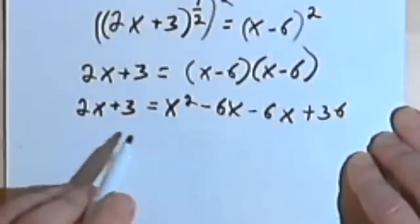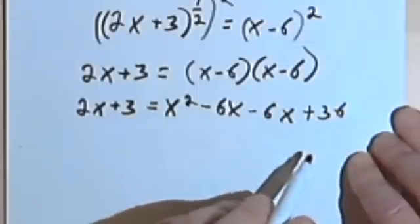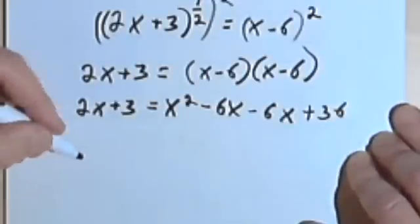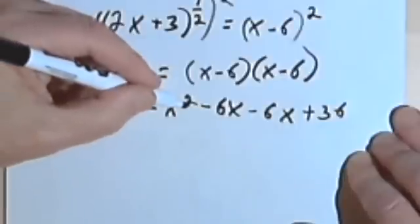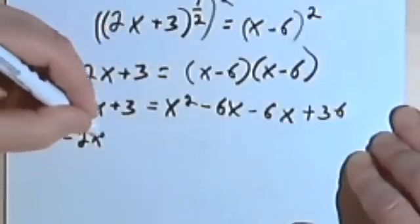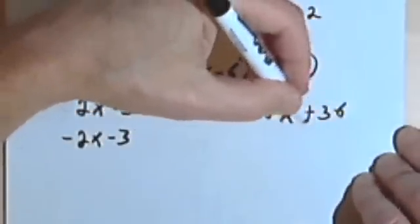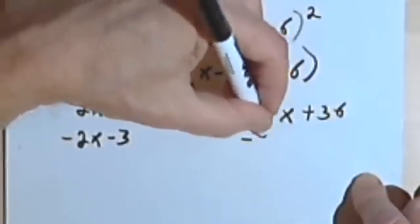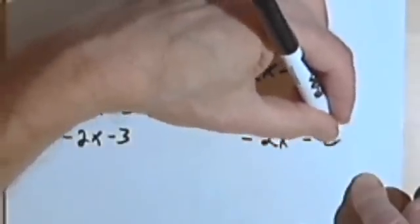So probably the easiest thing to do is to move the 2x and the 3 over to the right side of the equation. Let's see what happens. I'm going to still have an x squared, and I'm just going to write down minus 2x and minus 3.